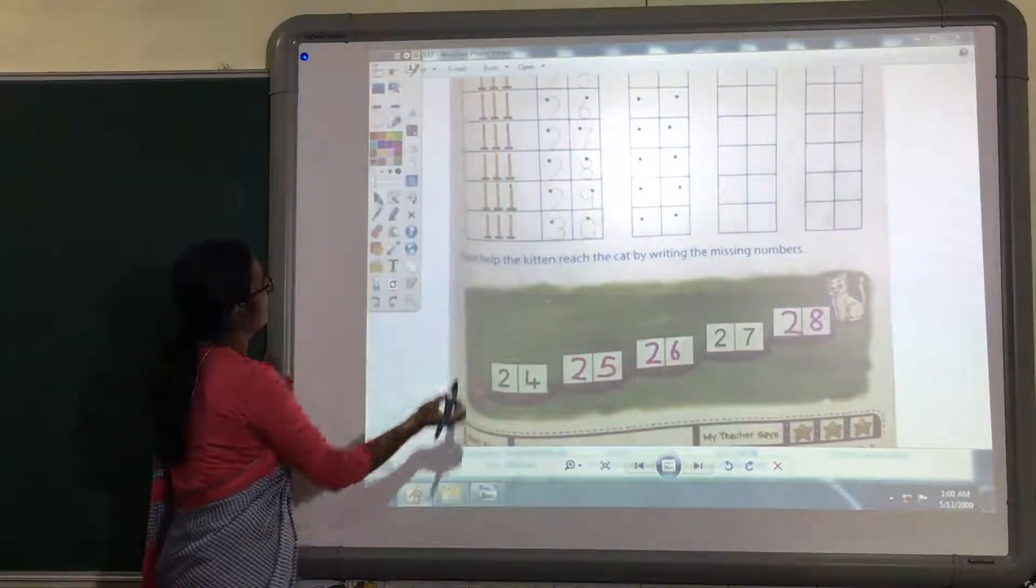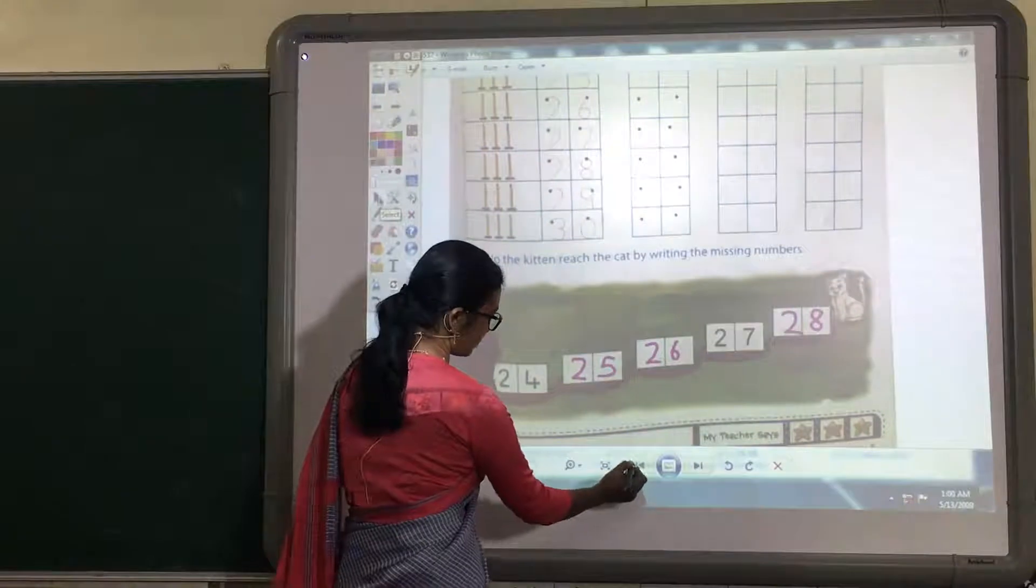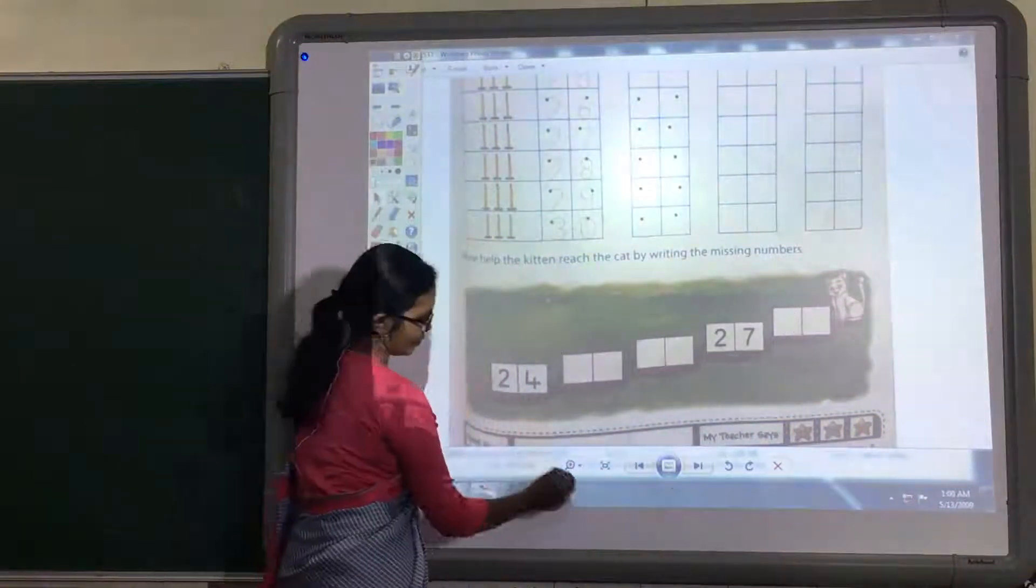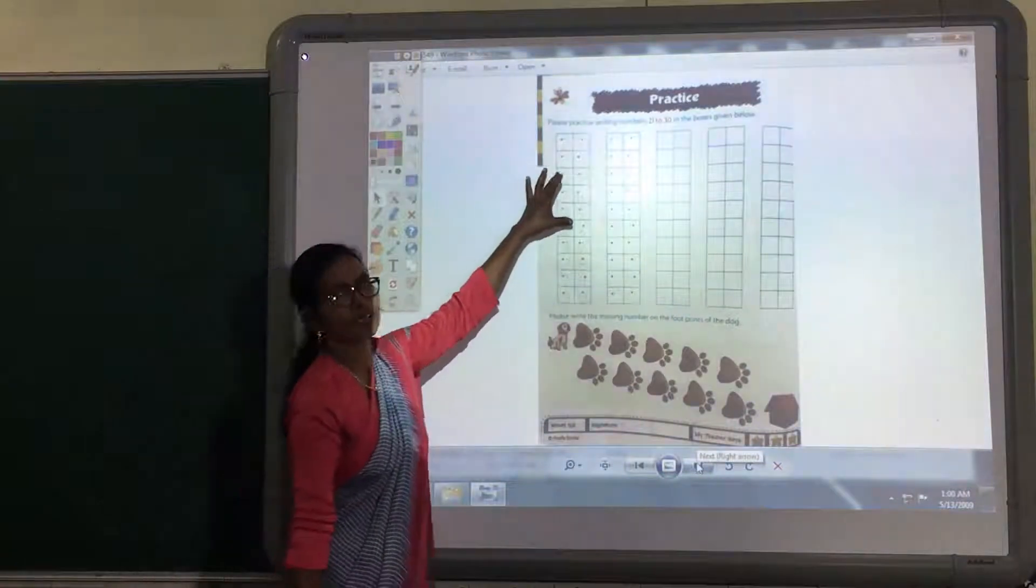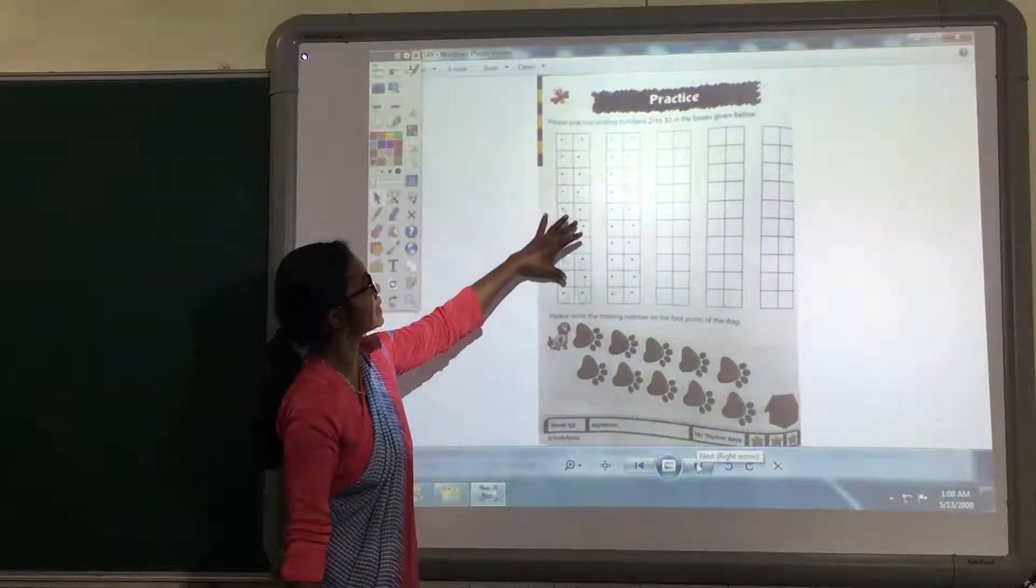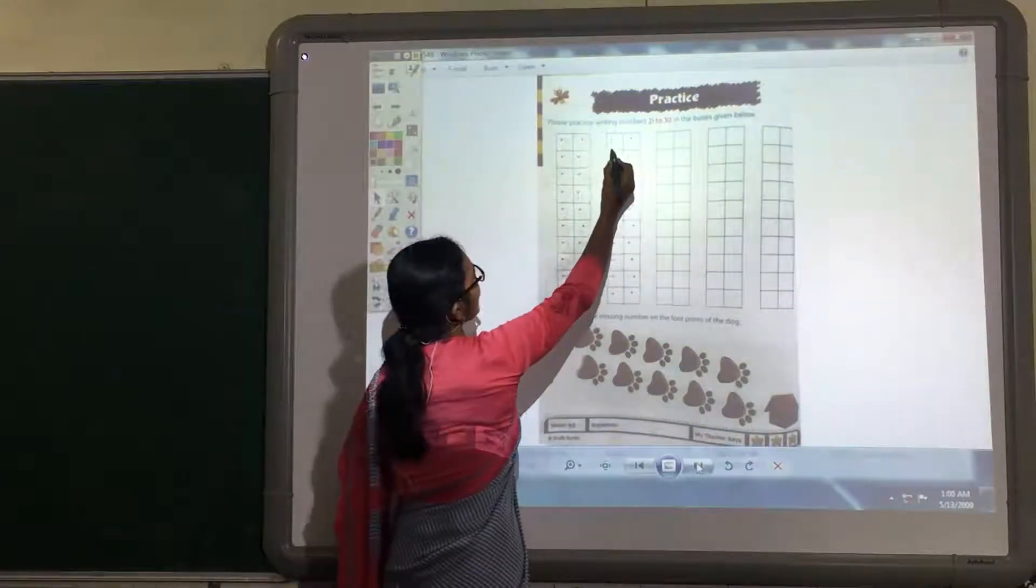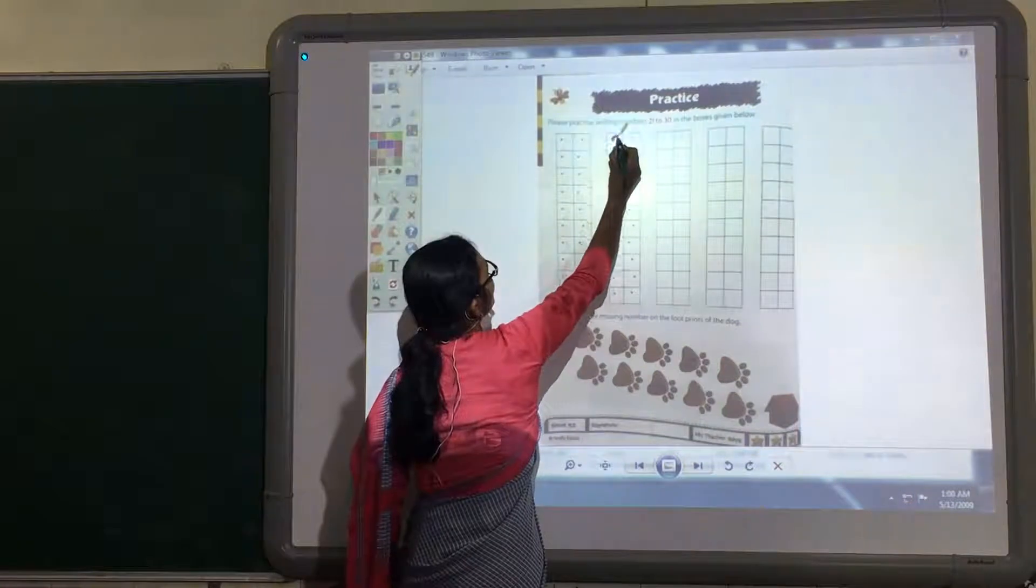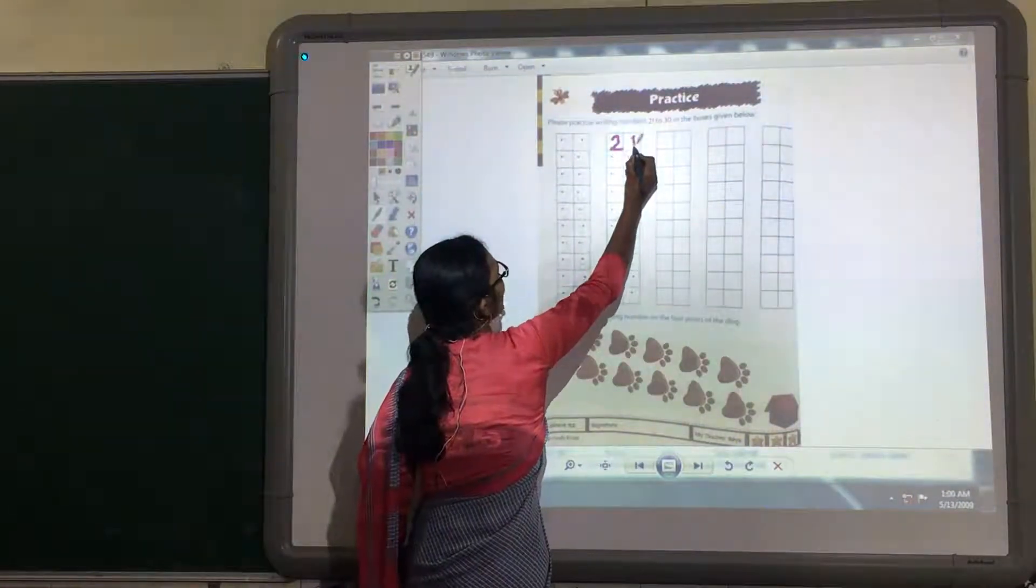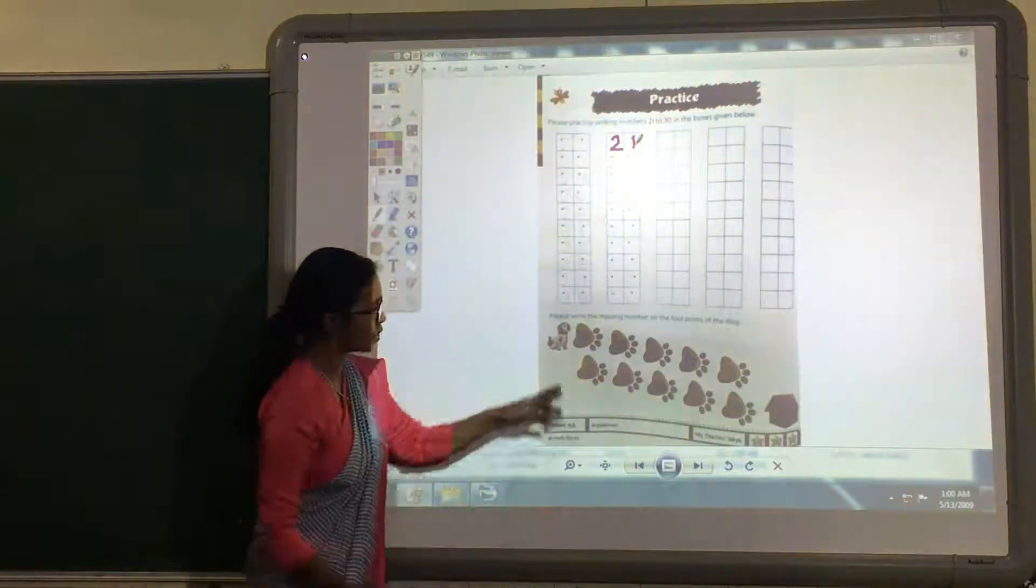Again, next page. Here once again you have to complete this. Now first I am going to do here. Once again, two tens and one, 21. Then you have to complete it yourself today with you.